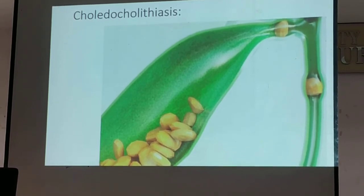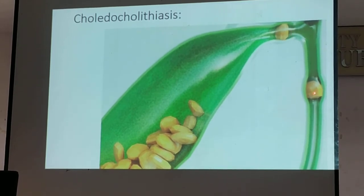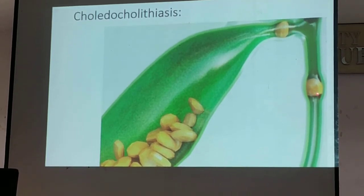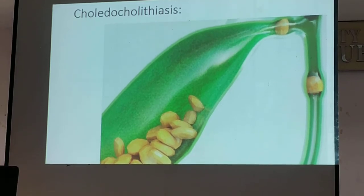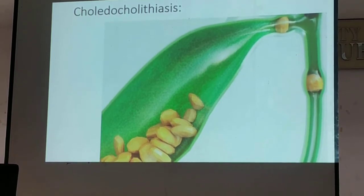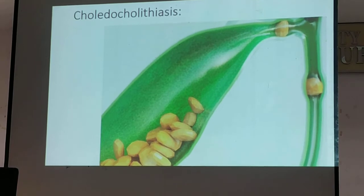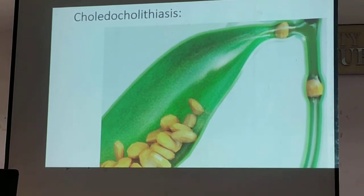This is a picture of your gallbladder. These are your gallbladder stones, and this would be the neck of your gallbladder. This is your common bile duct. What do you call the stone seen in the common bile duct? That is your choledocholithiasis. The stone in your gallbladder is cholecystolithiasis; the stone in your CBD would be choledocholithiasis, or simply CBD stone.